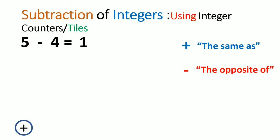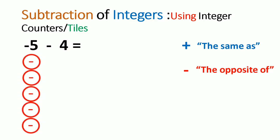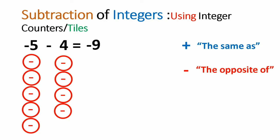Let us look at another example. If I had negative 5 minus 4, then we put 5 negative counters and 4 more negative counters. They cannot be paired simply because they are not of opposite signs. So we count all the negative counters — altogether we have 9 negative counters. Therefore negative 5 minus 4 is equivalent to negative 9.